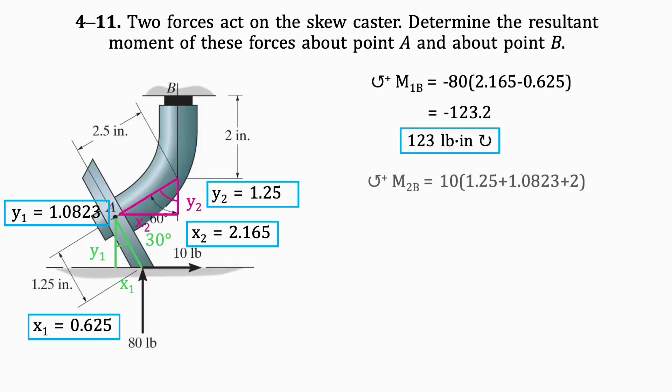The moment of the 10-pound force about point B is the force times its distance from B, which is the sum of y1, y2, and the given 2 inches. The result is 43.3 pound-inches in the counterclockwise direction.